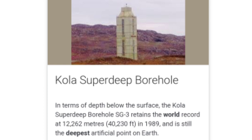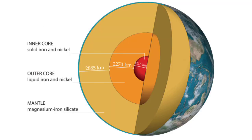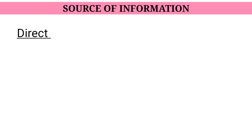No one has ever reached the center of the Earth. The deepest boring ever done by mankind is 13 kilometers, which is the Kola Superdeep Borehole, and it is still the deepest artificial point on the Earth. How do we know that there are different layers inside the Earth's surface? There are different sources of information — direct and indirect sources.